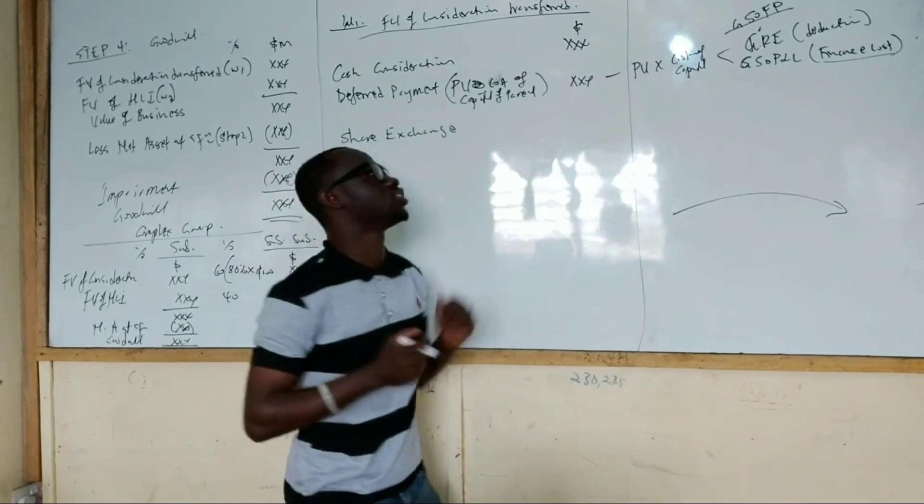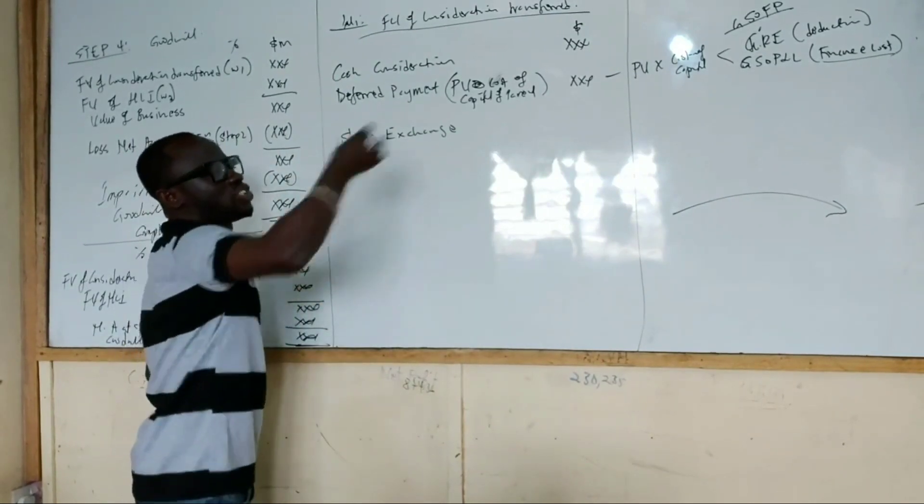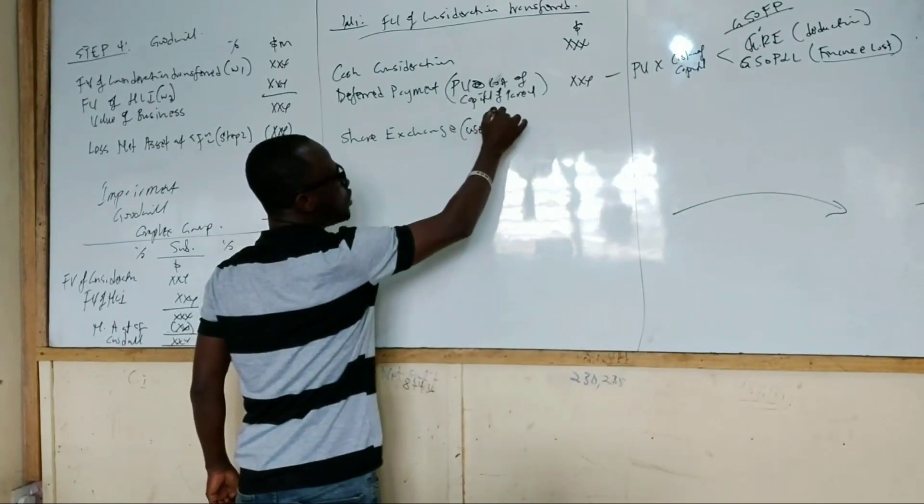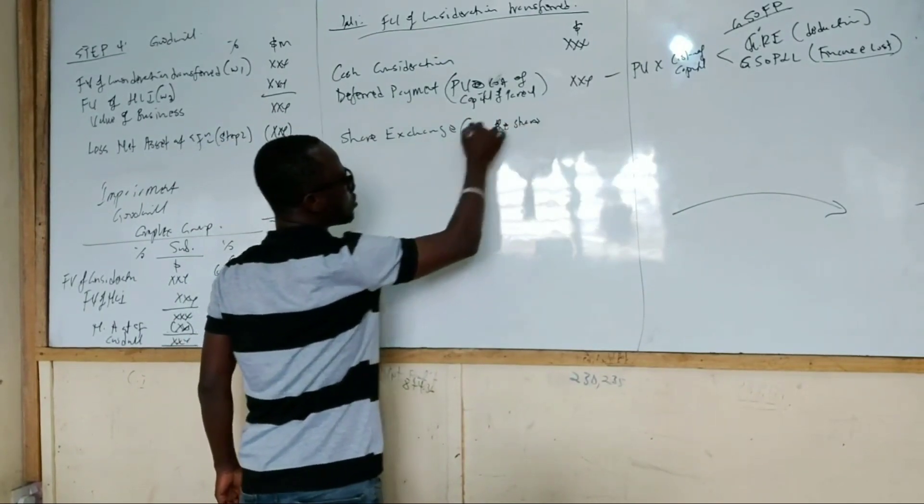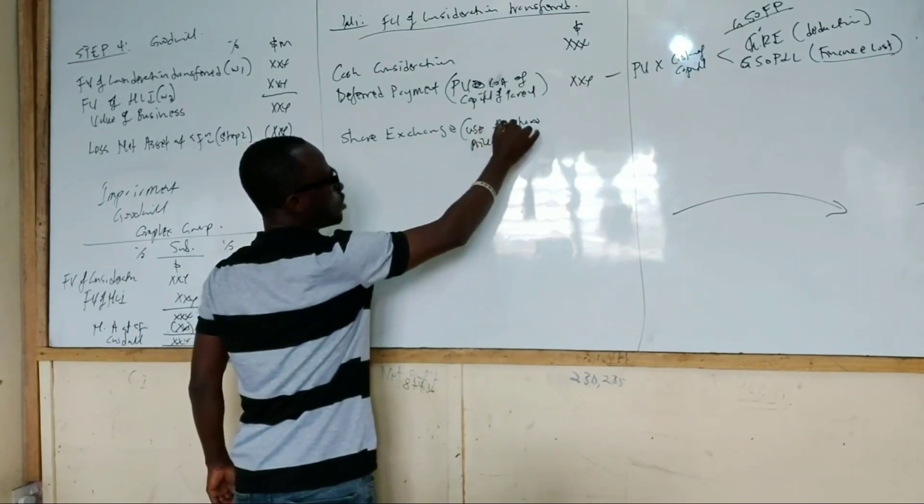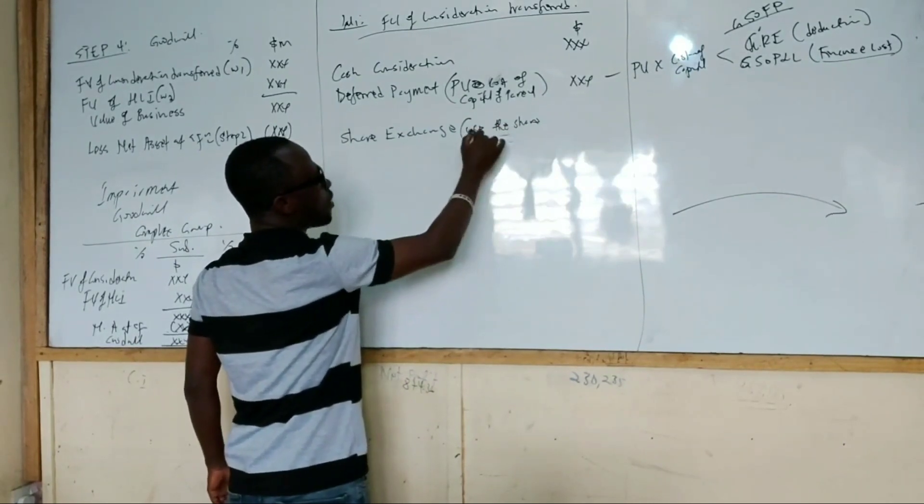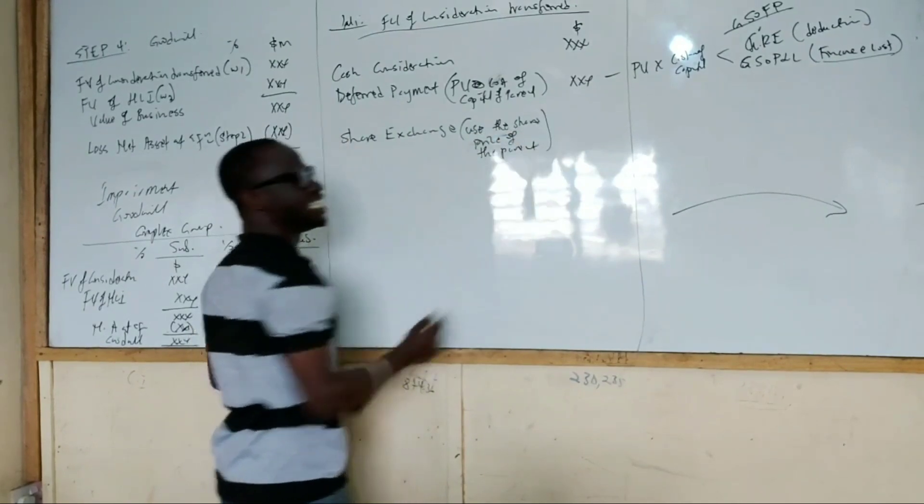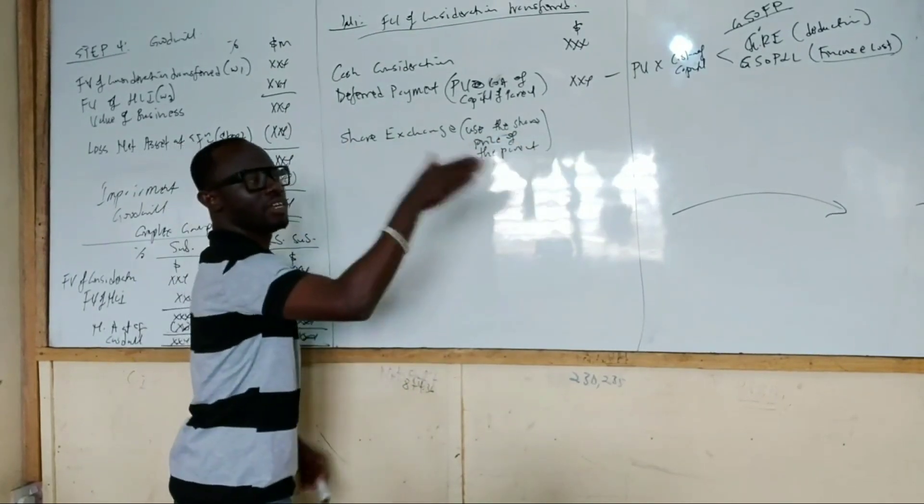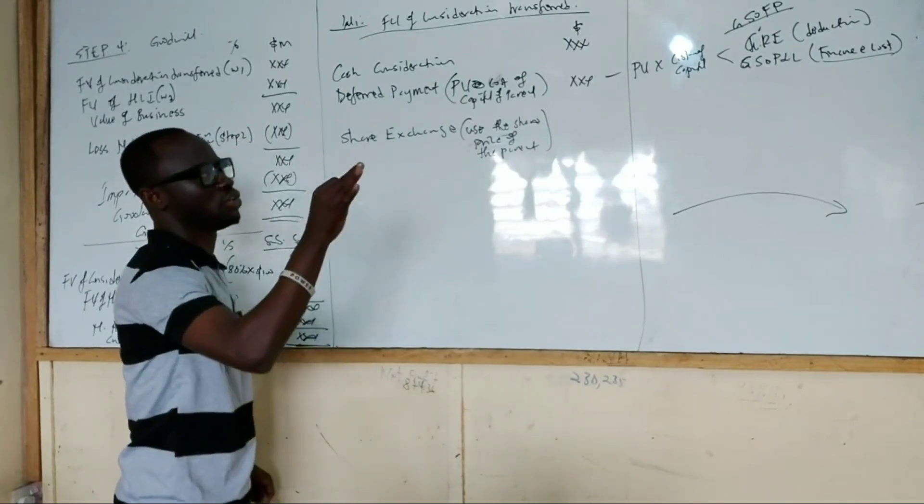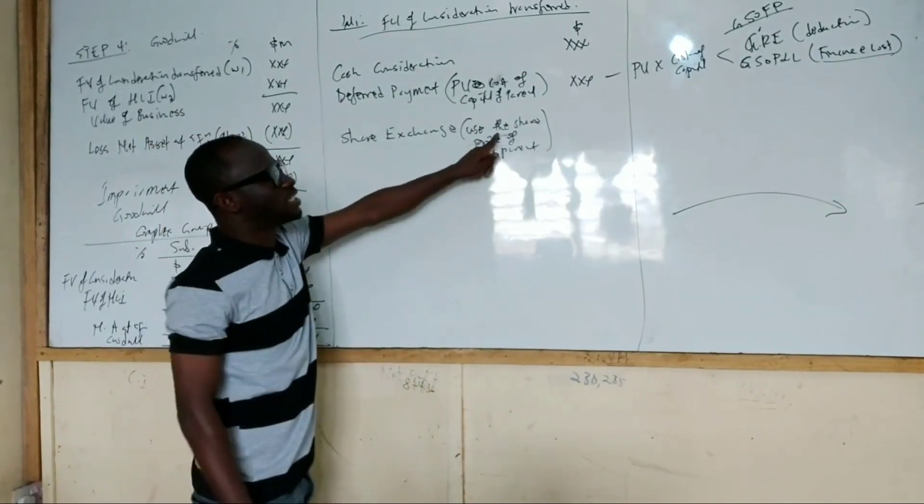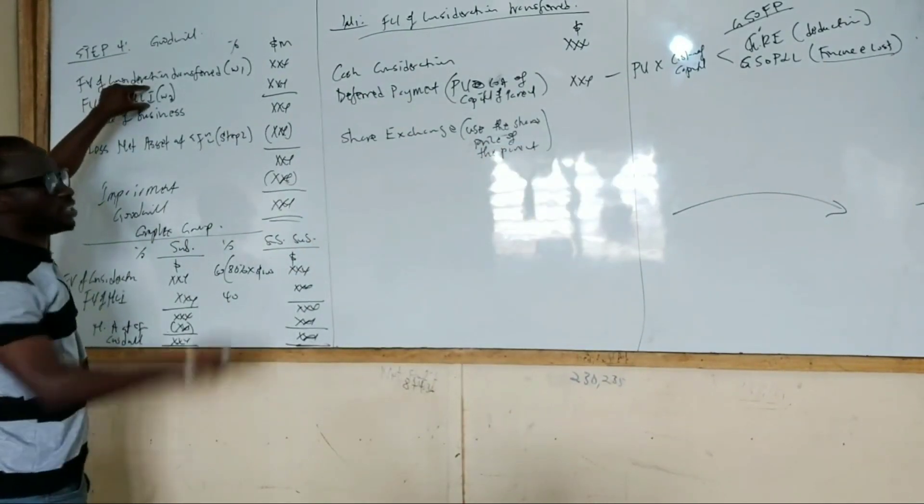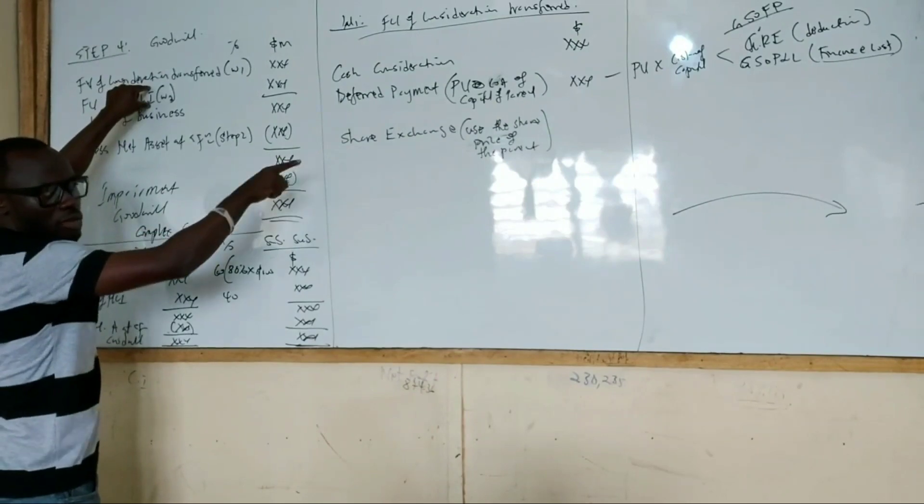So that is where there is share exchange. Please note that anytime there is a share exchange, you must use the share price of the parent's company. Why? Because it is the parent that is issuing the shares. This statement here is very important because when we get to the workings of non-controlling interest, I will bring it back again. So make sure you get that.